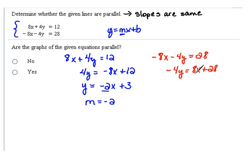And now if we divide everything by negative 4 to get y alone, we'll have y equals 8 divided by negative 4 would be negative 2x and 28 divided by negative 4 would be negative 7. So our slope of this line is a negative 2.